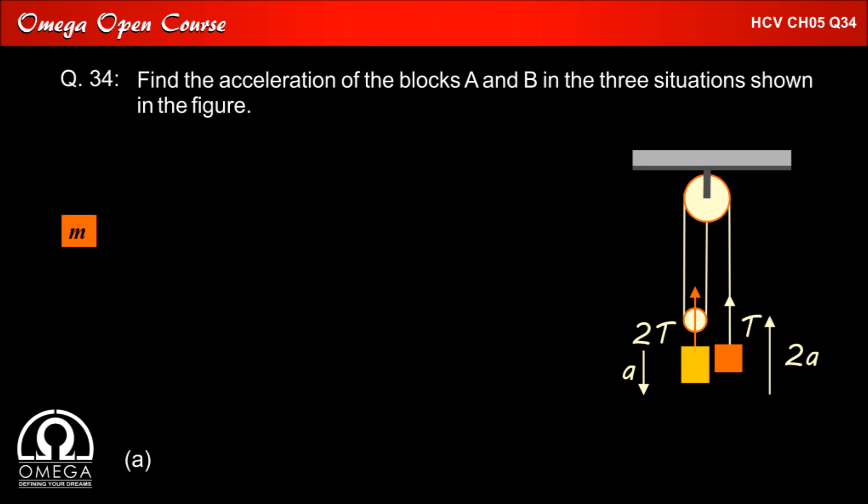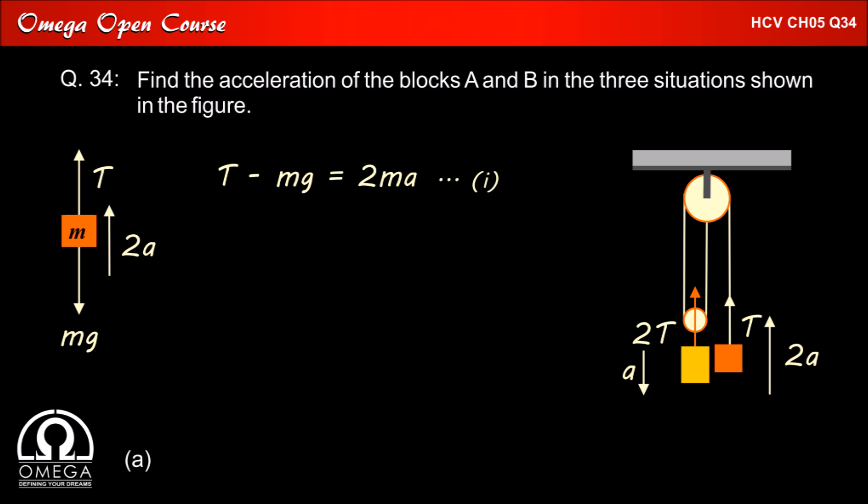Now let us make the free body diagram of block A. A gravitational force Mg acts on it in the downward direction. It is pulled up by tension T in the string and it is moving upward with acceleration 2A. Thus for this block, net force 2MA must act in the upward direction and T minus Mg must be equal to 2MA.